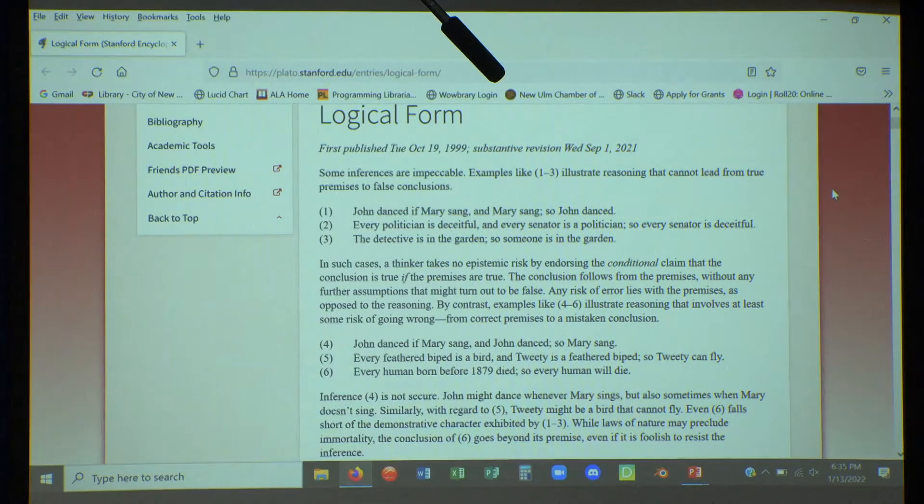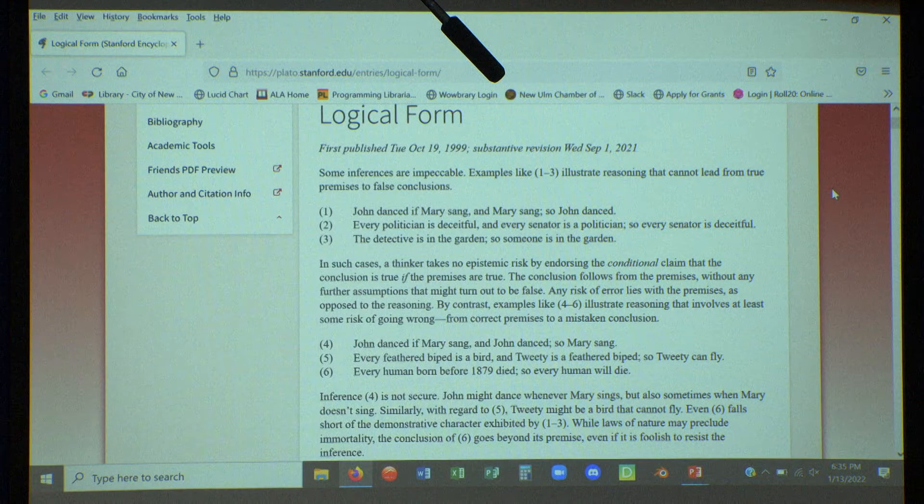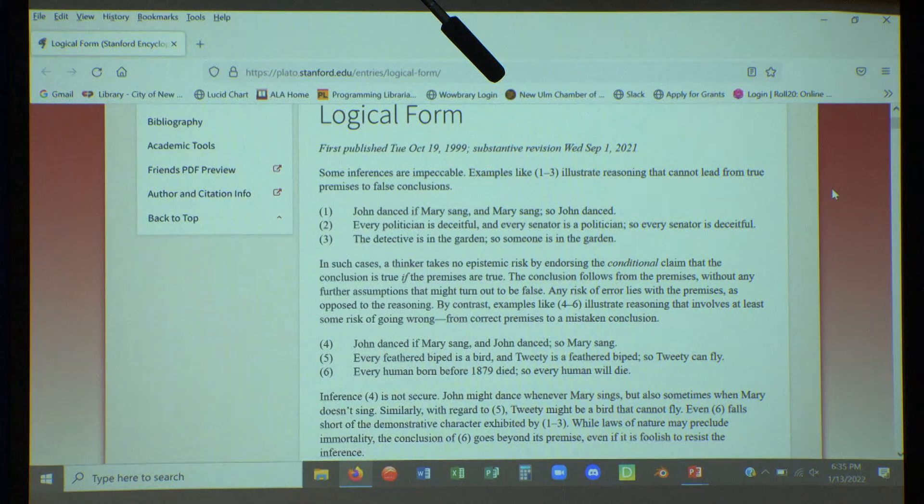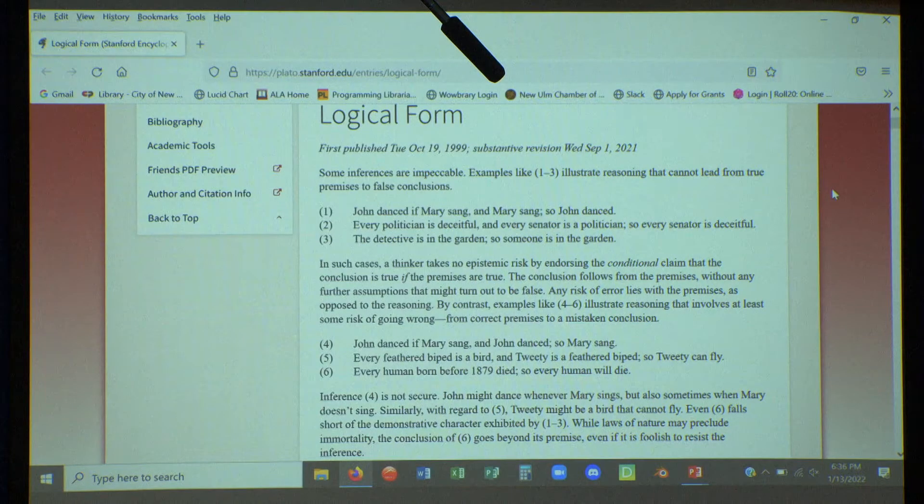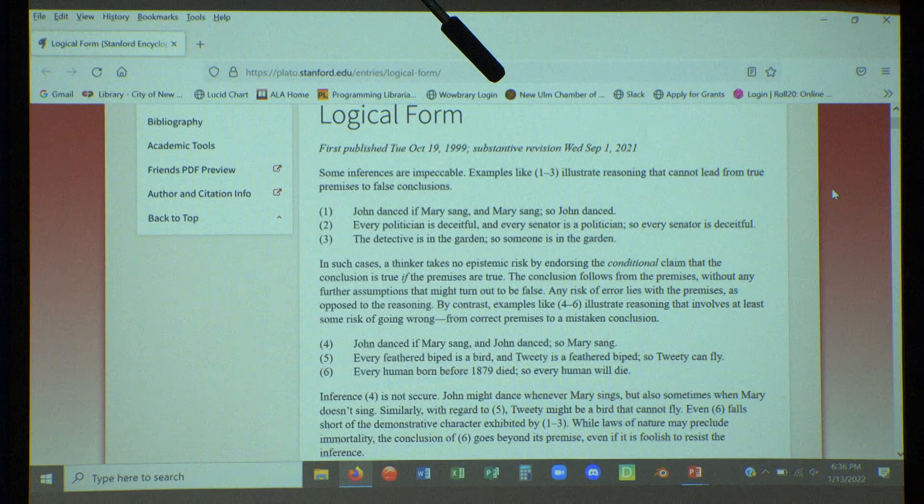John danced if Mary sang. And Mary sang, so John danced. This is a conditional statement. We know that if Mary sings, then John is going to dance. Because it's a cause and effect relationship. Every politician is deceitful and every senator is a politician, so every senator is deceitful. This is a conditional in which if A, then B, and if B, then C, and therefore A equals C. The detective is in the garden, so someone is in the garden. This is going from specificity to generality. This is something that is logically valid.